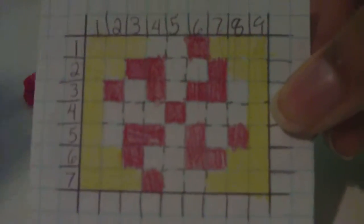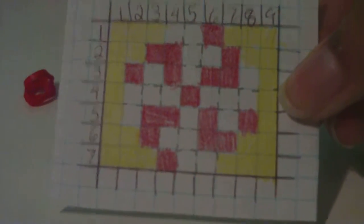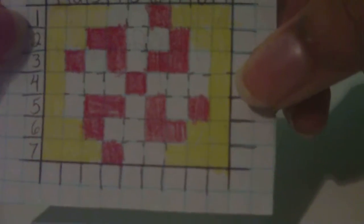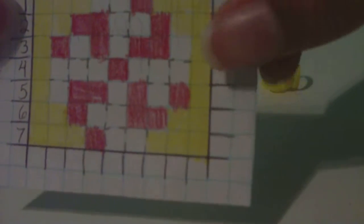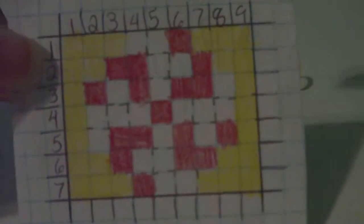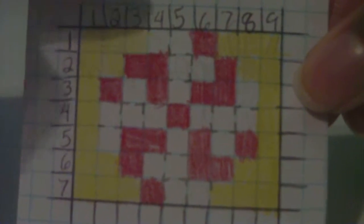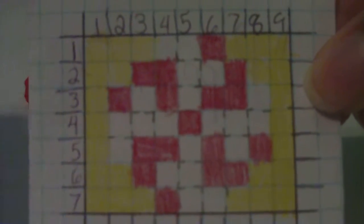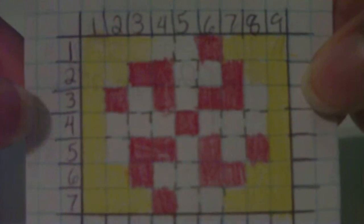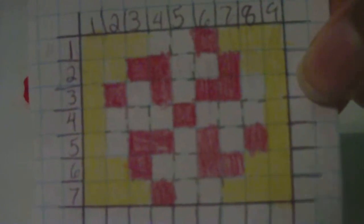How you would go about making this design is you would pause the video here and you would just go through the template exactly. You would look at the columns here on the top and then also the rows here on the side and just follow the template exactly making the design.